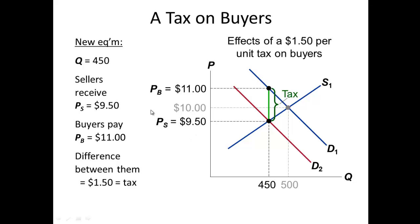So as you can see, both the buyer and the seller lose out — even though the tax is levied on the buyer. The buyer loses because they have to pay more for the pizza, and the seller loses because they receive less for the same pizza.